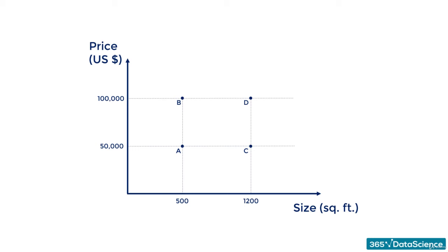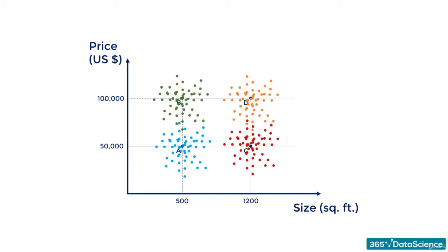Before we go any further, let's take a minute to discuss the previous situation. If this was a real-world situation, you would have many, many points, potentially forming four clusters. With the risk of oversimplifying the matter, B could represent small, expensive apartments, or rip-offs. A would represent small, reasonably-priced apartments.